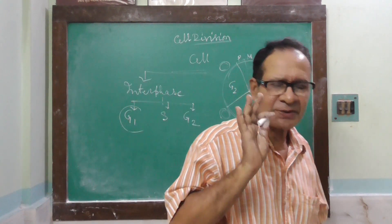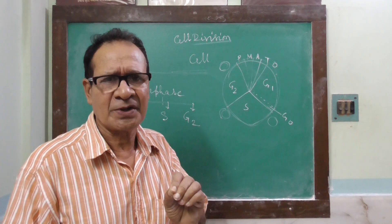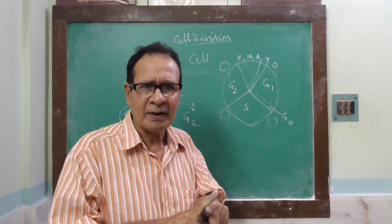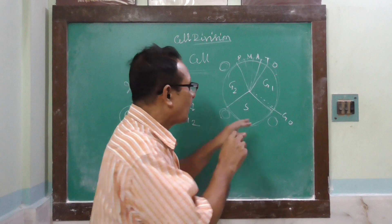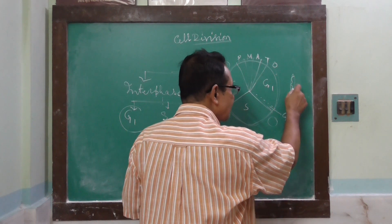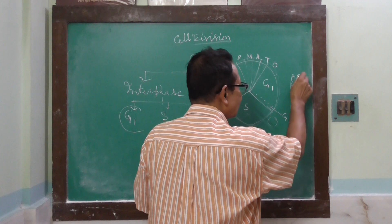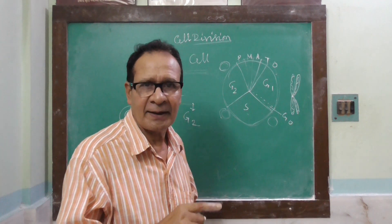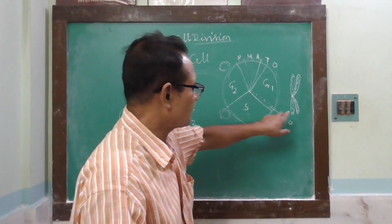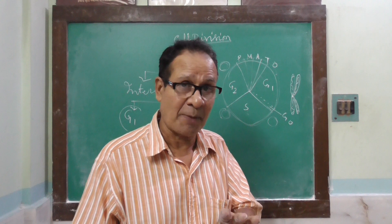After G1, a cell enters the S phase. Two important events occur in this phase. First, replication of DNA occurs — a single DNA is transformed into a double. So from G1, a chromosome has one chromatid, that is one single DNA. But during the S phase, each chromosome consists of two chromatids, that is two DNA. So chromosomal content becomes double, but chromosome number remains the same — the species-specific chromosome number remains the same.